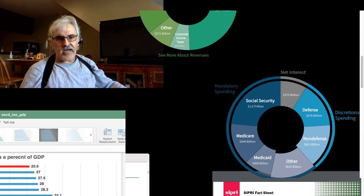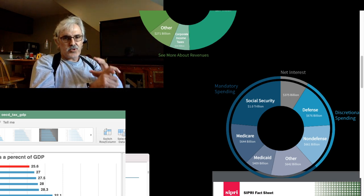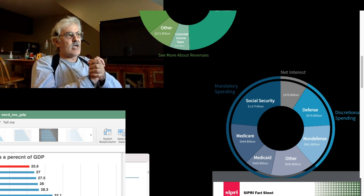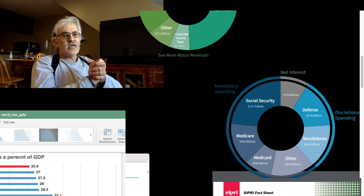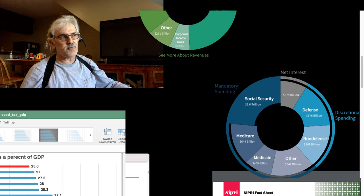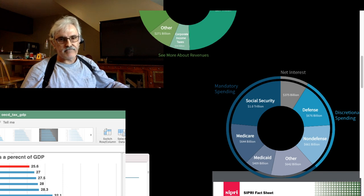The three biggest areas are Social Security, healthcare, and defense spending. That's why some people say, jokingly, that the United States federal government is an insurance company with an army — because Social Security is insurance for your retirement, and Medicare and Medicaid is insurance for your health.